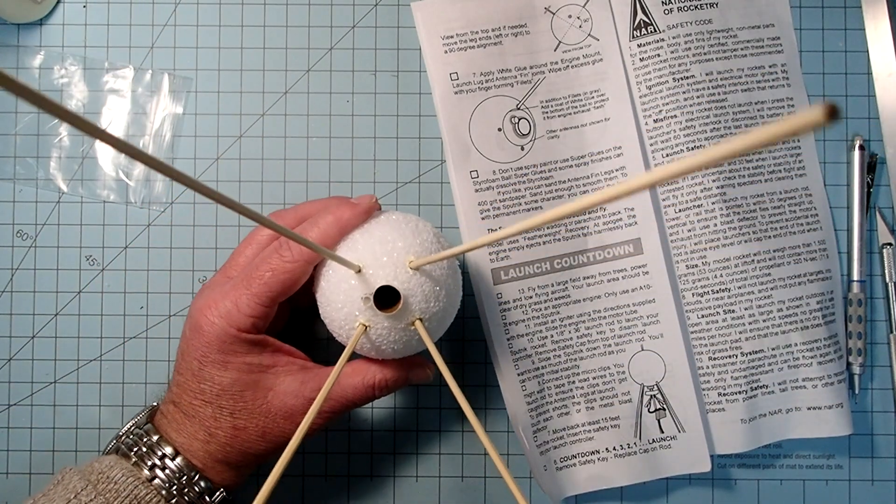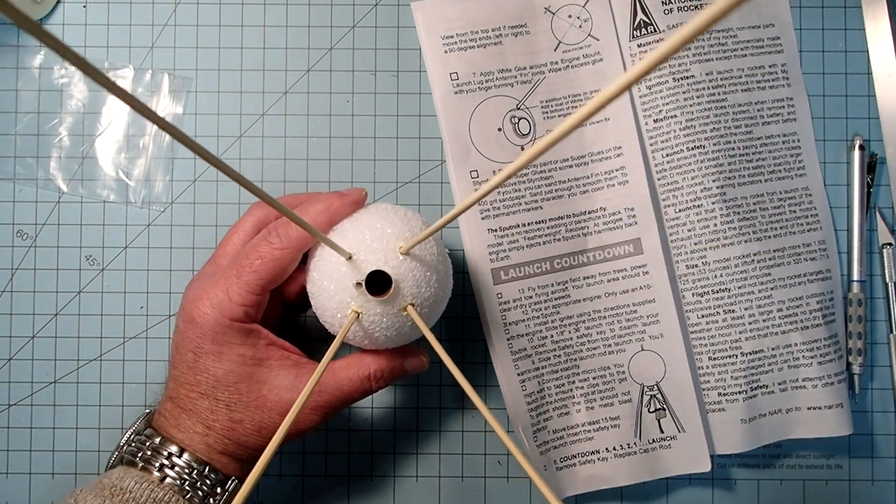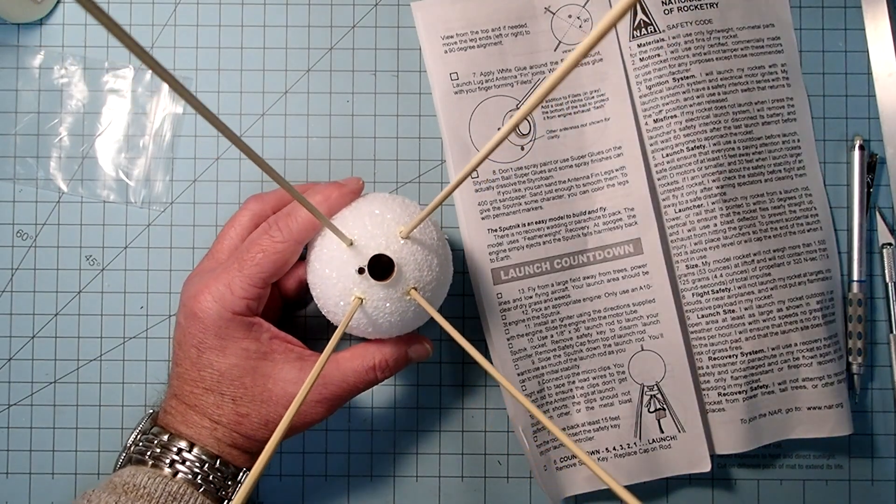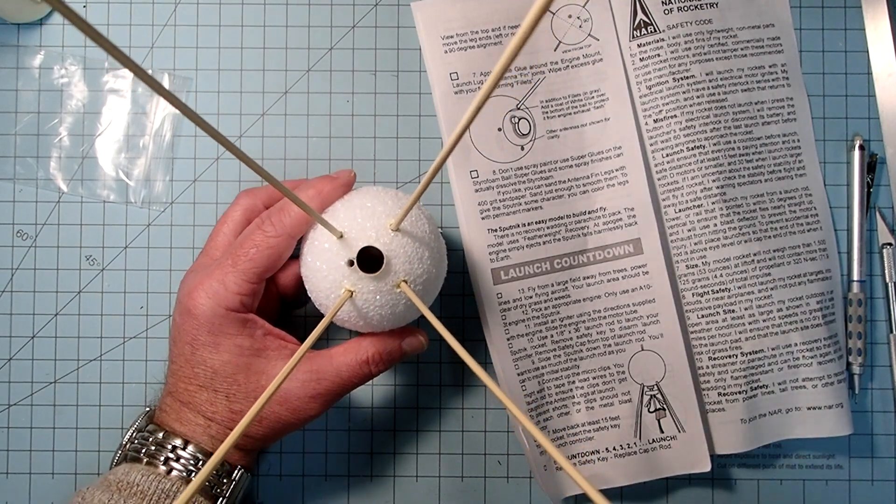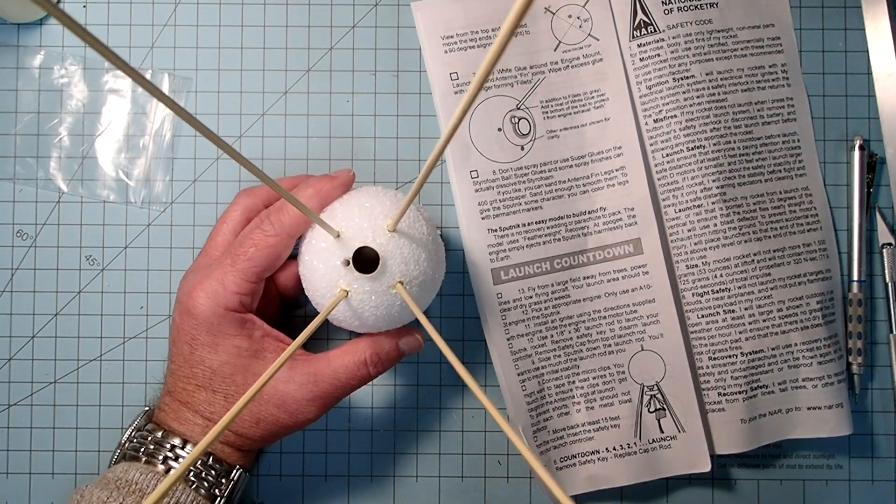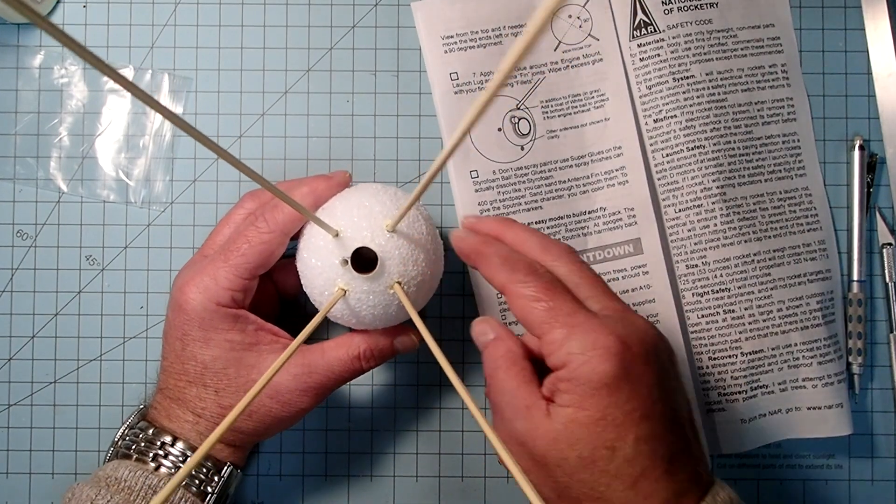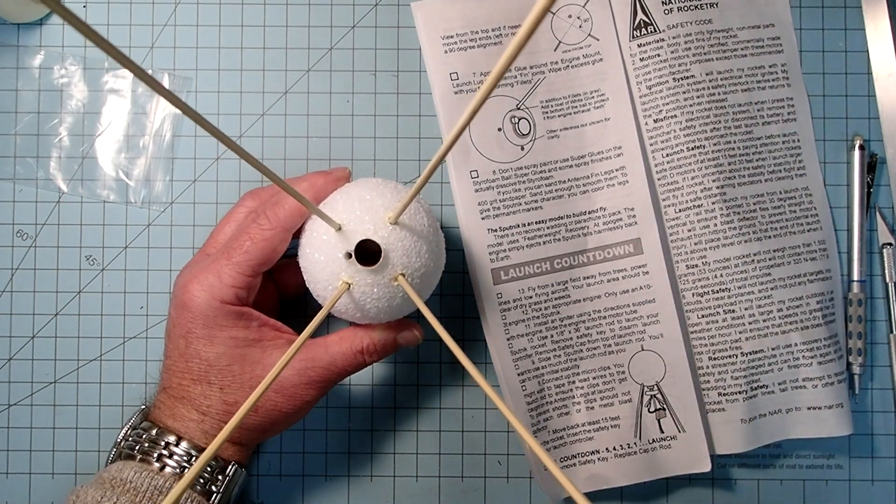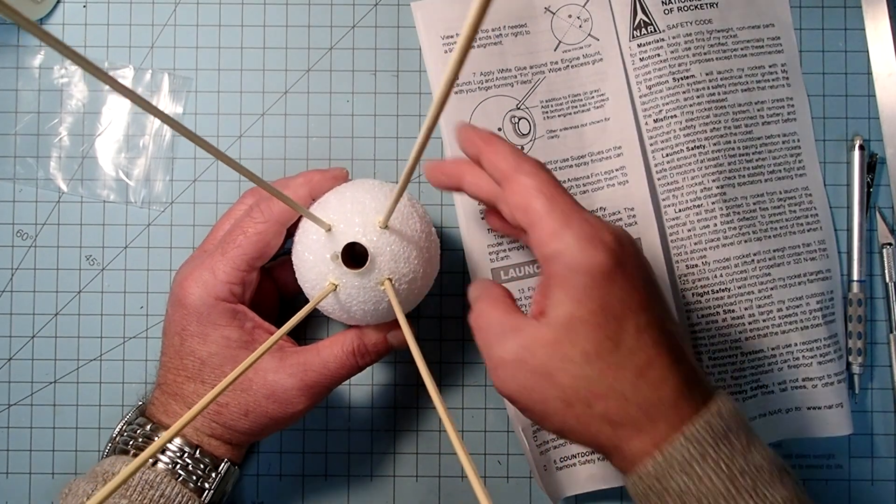Now, if you do want to decorate this, make note of this in the instructions, you can't use any kind of spray paint on here, or at least enamels and such. You could use acrylic paints. And there are some enamels that will attach to this without melting it. That's mainly the thing we need to worry about, is that the solvents found in most spray paints can melt the styrofoam here.